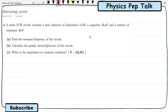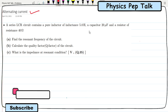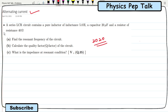Hello students and welcome to Physics Pep Talk. In this video I will discuss the alternating current chapter. In the last 4 years I will discuss this question from the 2020 question paper. A series LCR circuit contains a pure inductor of inductance 5 henry, a capacitor of 20 microfarad, and a resistor of 40 ohms. Find the resonating frequency of the circuit, calculate the quality factor of the circuit, and what is the impedance at resonating condition.